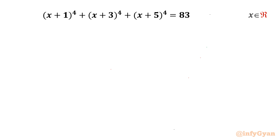Welcome back to Infigyan, my dear friends. In this video we are going to take up one very interesting and challenging quartic equation: (x+1)⁴ + (x+3)⁴ + (x+5)⁴ = 83. We have to find out all real solutions. So let us get started straight away with our substitution.